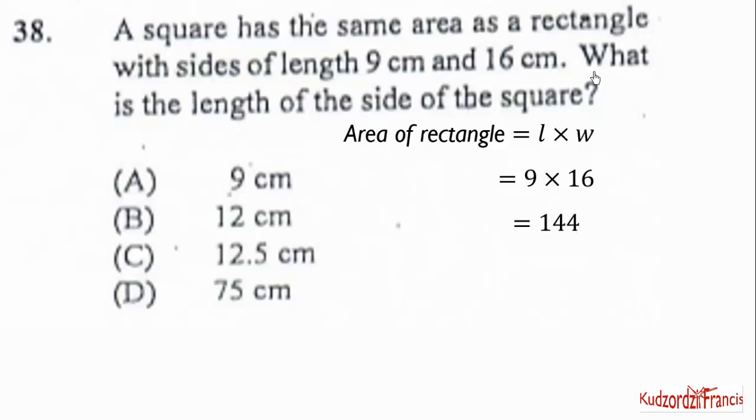Now we are told that the square also has the same area. So it means that the square has the same area. So it means that the area of the square will be equal to 144. So we equate L² to 144. Take the square root, positive square root of both sides, to get L equal to 12 cm.